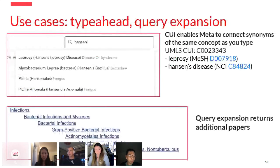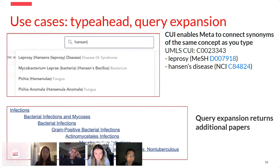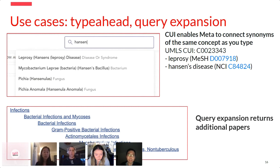Here I want to illustrate how we use the unique concept identifiers for information retrieval in Meta. One feature is what we call type-ahead: many concepts have different names — for example, leprosy is also known as Hansen's disease. When the user starts to type 'Hansen's,' we identify through synonym lookup and map to the canonical name and the underlying identifier. We then use the structure of the ontology to return additional documents — we call this query expansion.